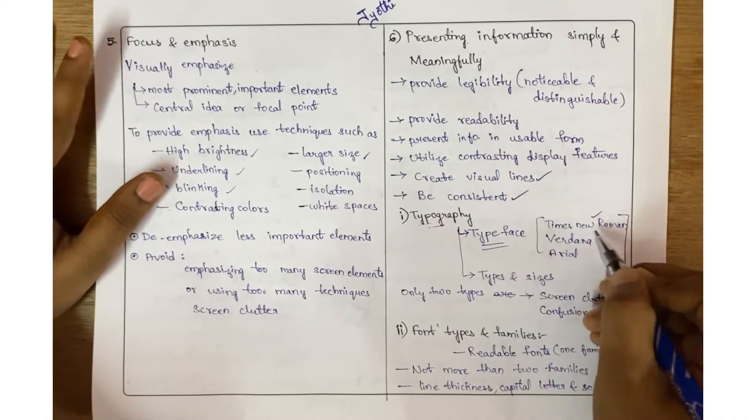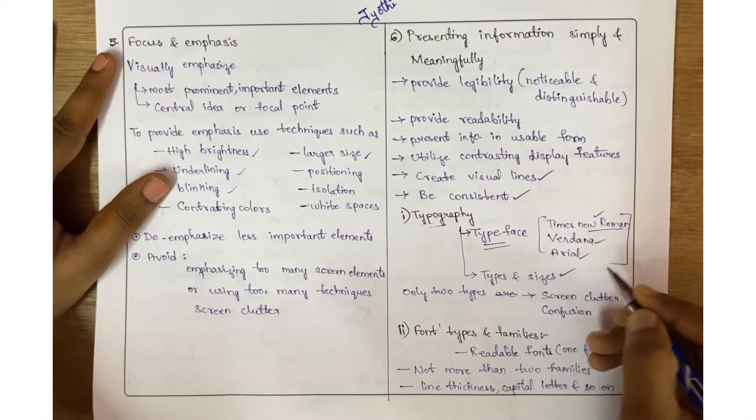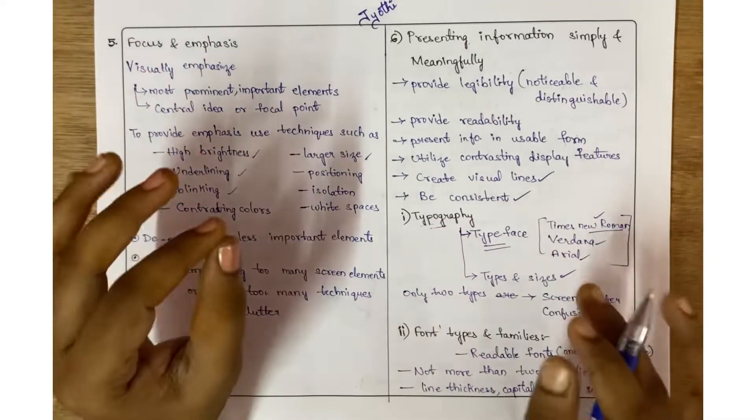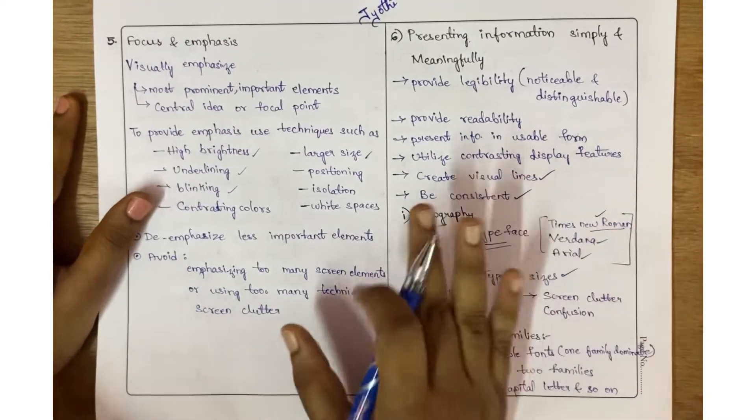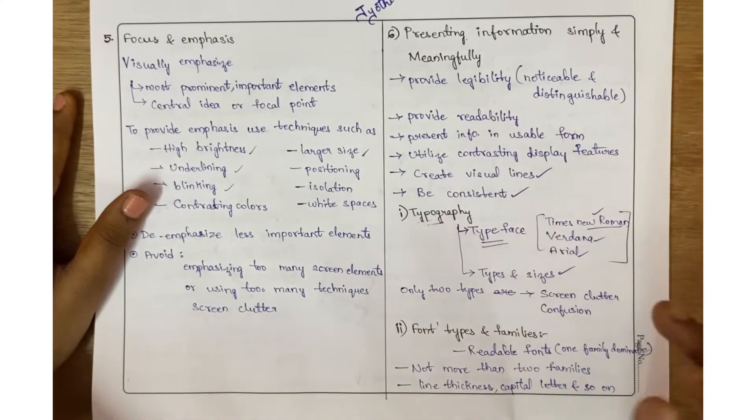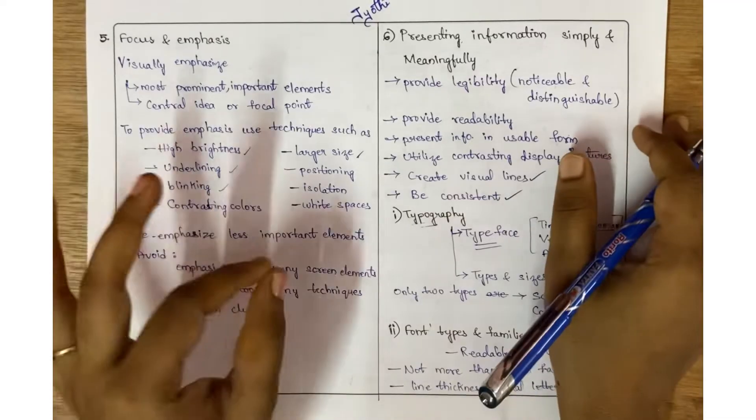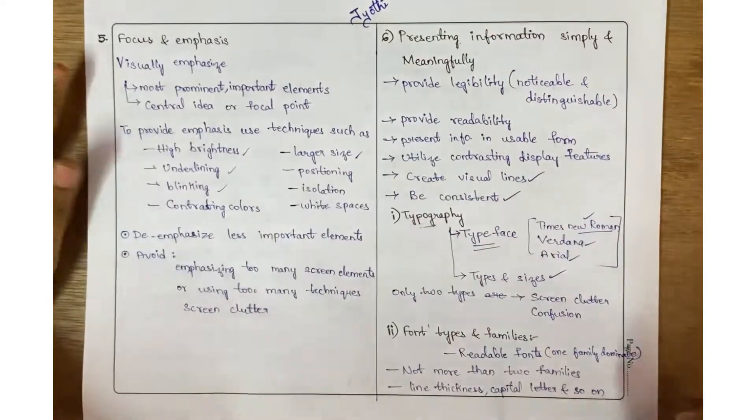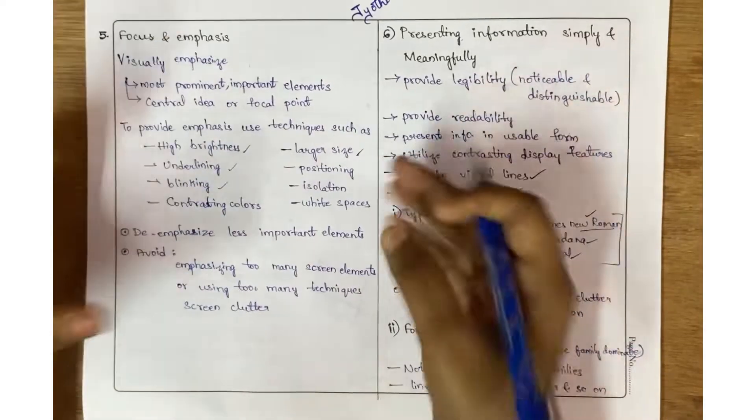In the typography part, the types used are Times New Roman, Verdana, Arial, and using only two types reduces screen clutter and confusion. Now here in this page I have used one font for the whole page, but if I asked one friend to write this part and another friend to write another part, it would be very confusing.